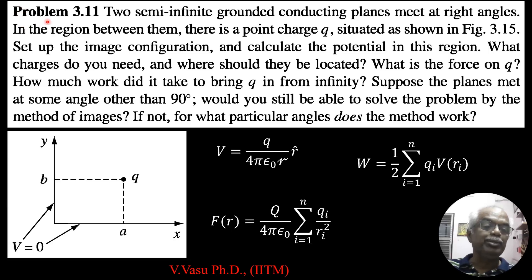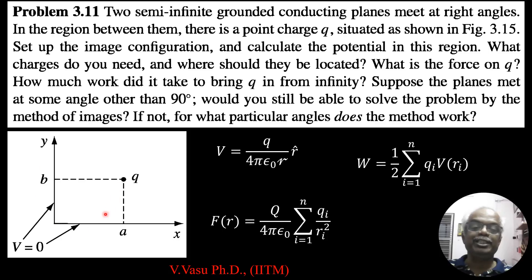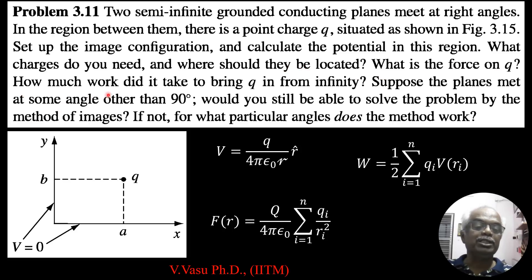Today we will solve problem 3.11 of Griffiths 4th edition Introduction to Electrodynamics. The problem states: two semi-infinite grounded conducting planes meet at right angles. In the region between them, there is a point charge Q situated as shown in figure 3.15. Set up the image configuration and calculate the potential in this region. What charges do you need and where should they be located? What is the force on Q?